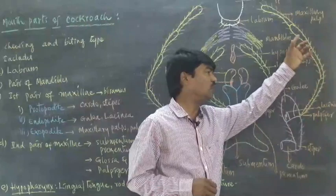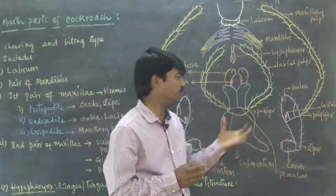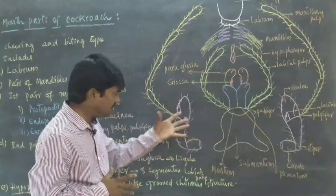Exopodite arises from the palp, a first segment small segment on the wall of maxillary palp, included with some bristle-like structures. What is the importance of maxillae, first pair of maxillae in the cockroach mouth parts?